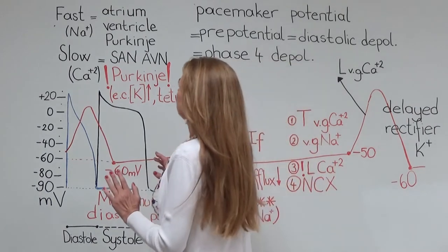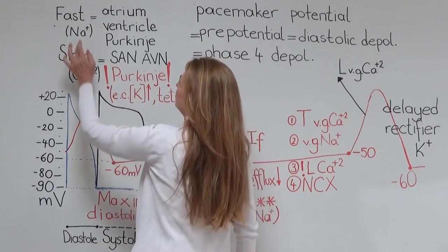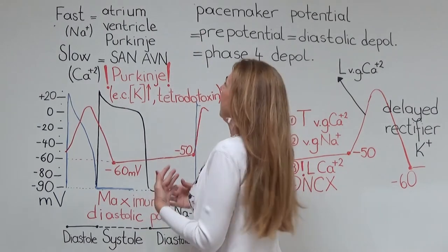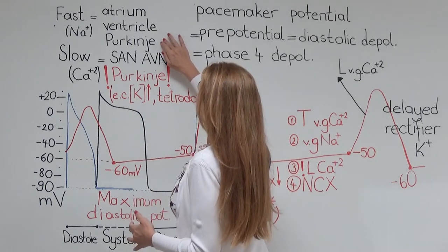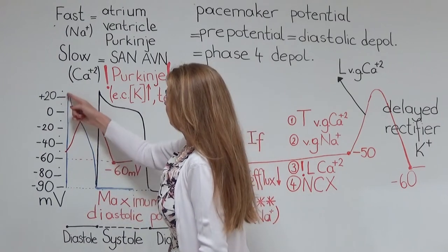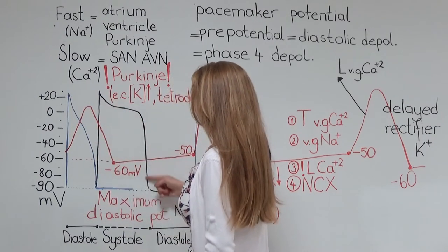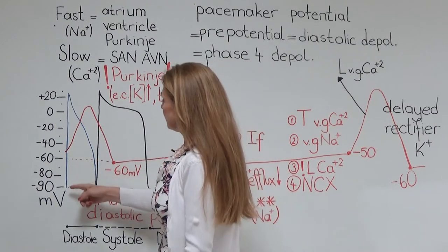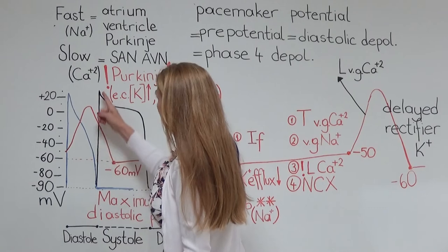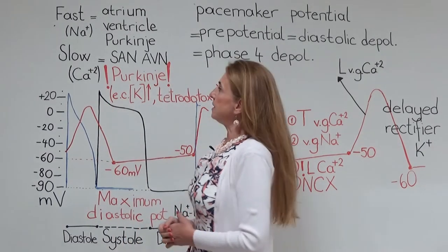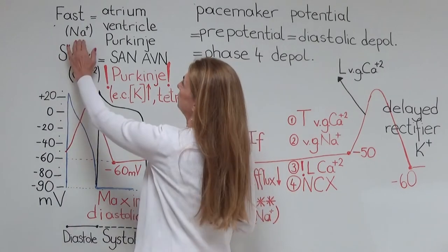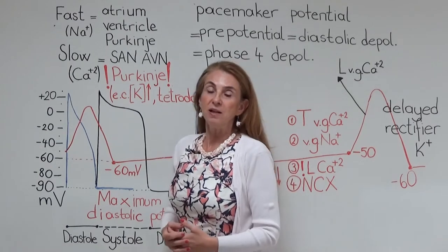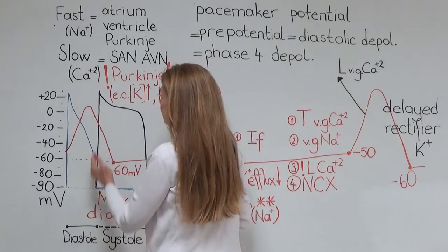We know that the heart cells can produce two different types of action potentials: fast and slow. The fast action potential is produced by the atrial and ventricular muscle cells, and the conduction cells of the heart, the Purkinje cells. We see here an atrial fast action potential and a ventricular one. The depolarization phase of a fast action potential is very steep because it is produced by voltage-gated sodium channels that open and close very quickly.